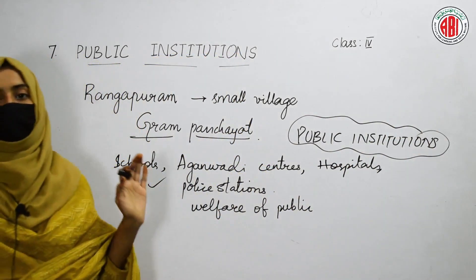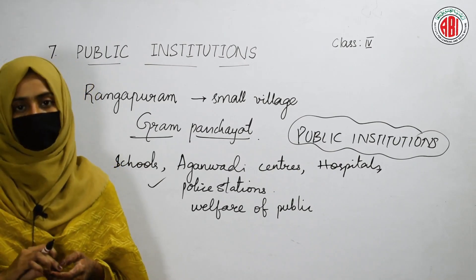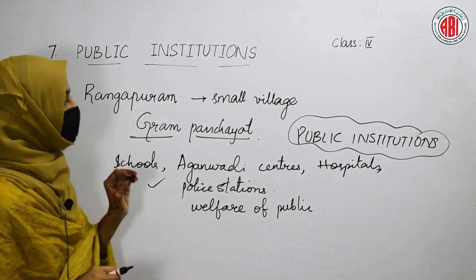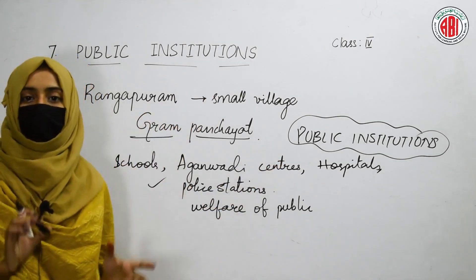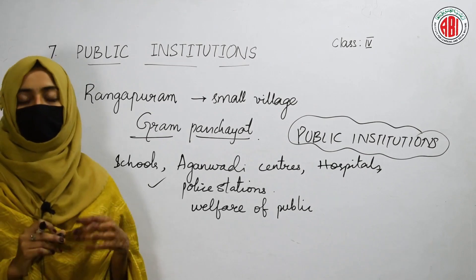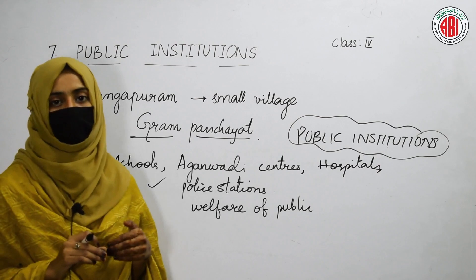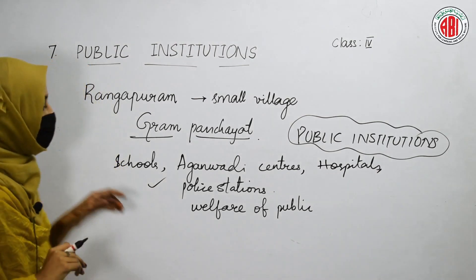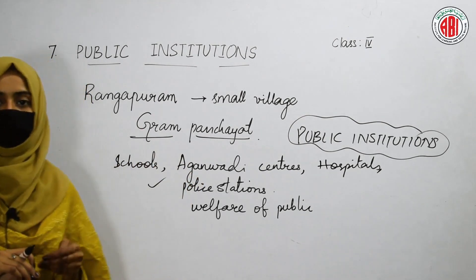The places where facilities are provided for the people of the village or for the public are called public institutions. In some villages, the Gram Panchayat has a team of members who are people of the village and who provide all the facilities. If they have any problem, these people solve them.